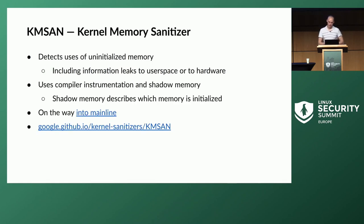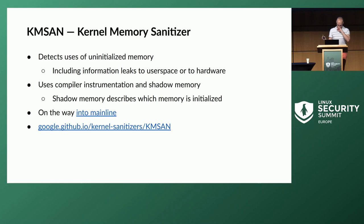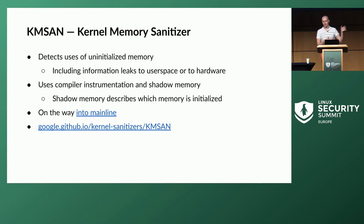First, we have the kernel memory sanitizer (KMSAN), which detects uses of uninitialized memory. If you declare a stack variable and forget to initialize it, then use it in a condition, KMSAN can detect that. It also detects information leaks across security boundaries — for example, if someone kmallocs memory and copies it to user space without initializing, that's a potential security vulnerability, and KMSAN can detect that. Like KASAN, it uses compiler instrumentation and shadow memory, but stores information about whether bytes are initialized rather than accessibility.